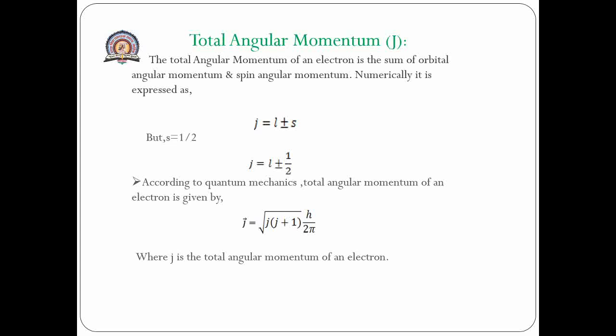Now introducing the concept of total angular momentum, represented by capital J. Total angular momentum is the sum of orbital angular momentum and spin angular momentum: J-bar = L-bar ± S-bar. Since s = 1/2, j = l ± 1/2. According to quantum mechanics, the total angular momentum is given by J-bar = √(j(j+1)) × (h/2π), where j is the total angular momentum quantum number. Thank you.